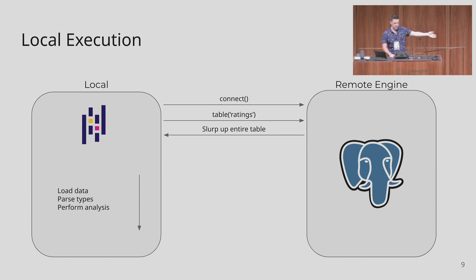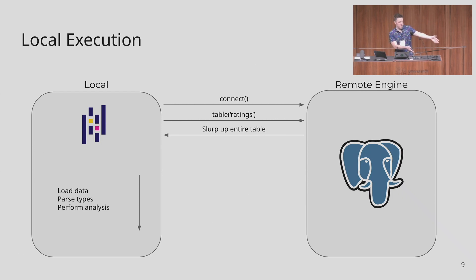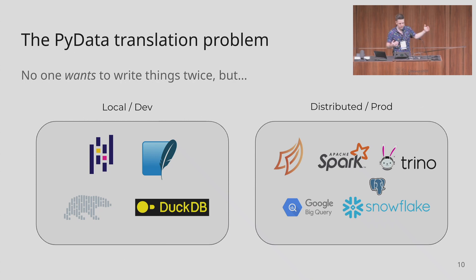You've got pandas on the left for local execution and on the right a remote engine — let's say Postgres, but it could be different engines. You connect to the database, pull out the table, and pull all of that table into memory. It takes it in Postgres's wire format, probably turns it into a list of tuples, and then loads into pandas. But if you run out of memory, you're out of luck. You're treating the remote database as a fancy file system and leaving scalability and performance on the table.